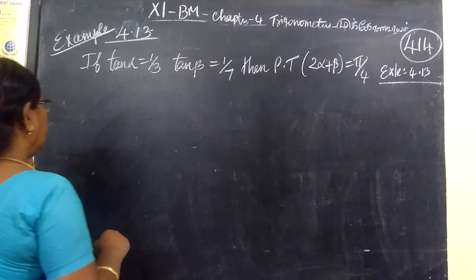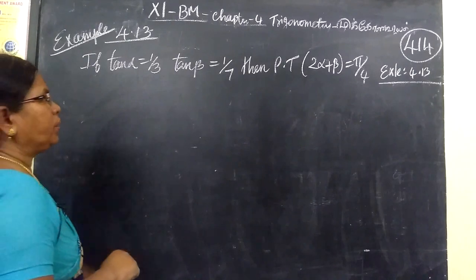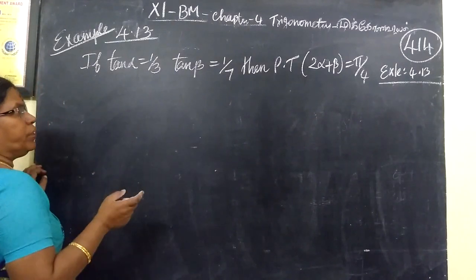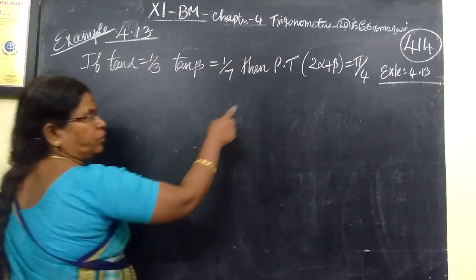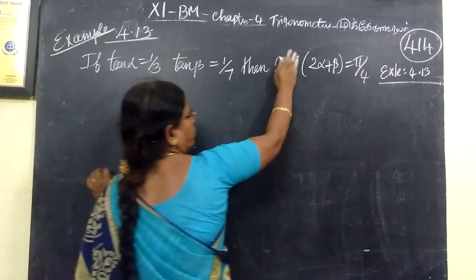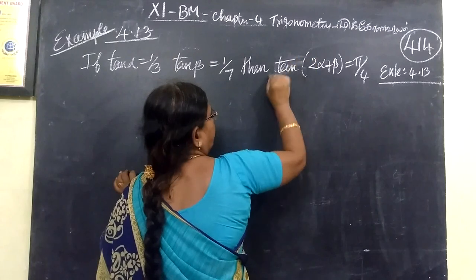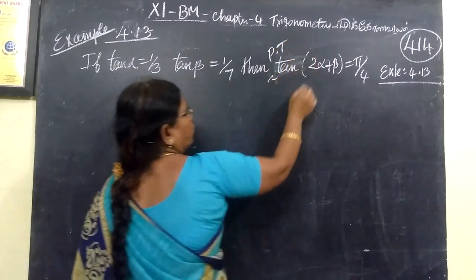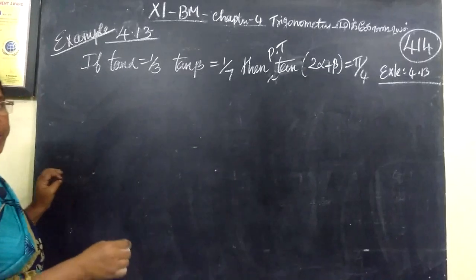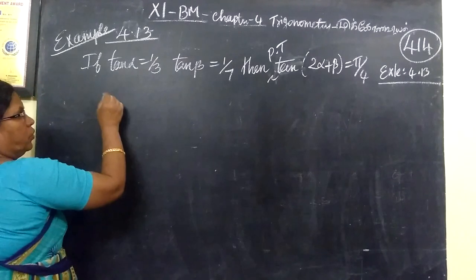So, coming to the next question, example 4.13. tan α equals 1/3, tan β equals 1/7. Prove that tan of 2α plus β equals π by 4.